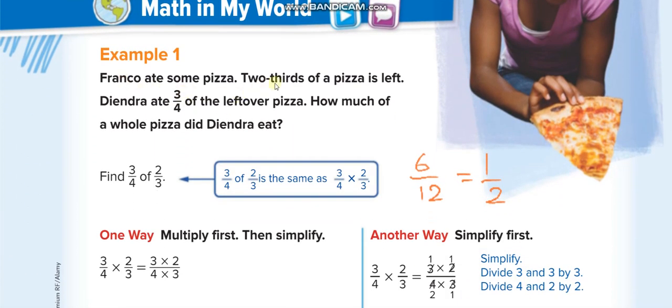Here's the first example: Franco ate some pizza. Two-thirds of a pizza is left. Diendra ate three-fourths of the leftover pizza. How much of a whole pizza did Diendra eat? You have to find two-thirds of three-fourths. This is the same as 3/4 times 2/3, so you multiply the numerators together and the denominators together.